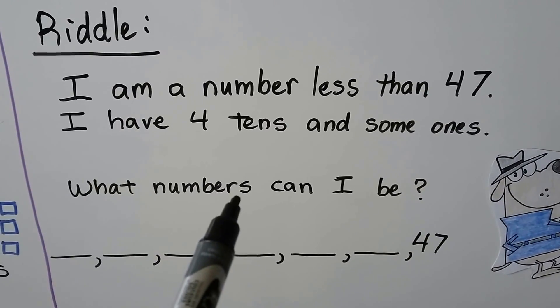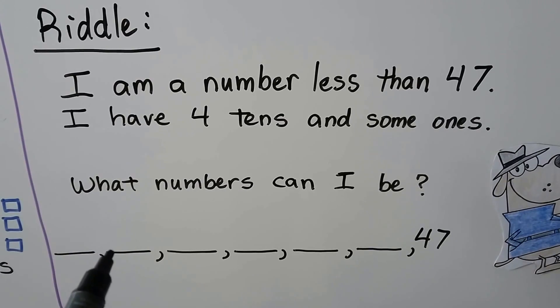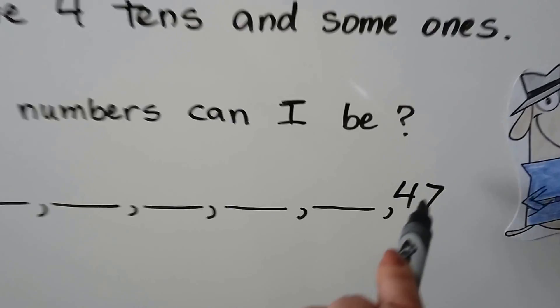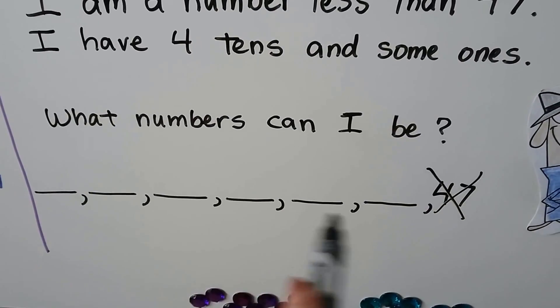So the first thing I notice is it says numbers. That means there's going to be more than one answer. It's less than 47, so it can't be 47. It's got to come in front of 47. It comes before 47.